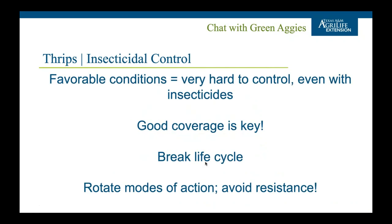When it comes to insecticidal control, thrips are very hard to control even with insecticides — even in favorable conditions with good coverage on a single plant in a cage. Coverage is key. Breaking the life cycle is critical — hit those newly emerged pre-pupae and pupae when they emerge. You also want to rotate modes of action to avoid insecticide resistance. Do not just rotate letters within the same number group — rotating 4A and 4B is not sufficient. You must rotate between different numbers, like a 4 with a 6 or a 5.